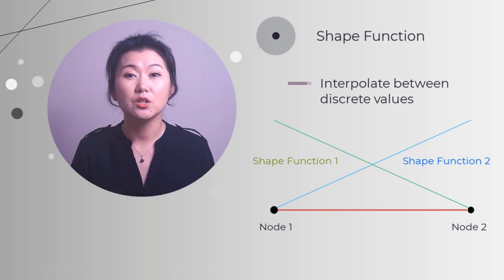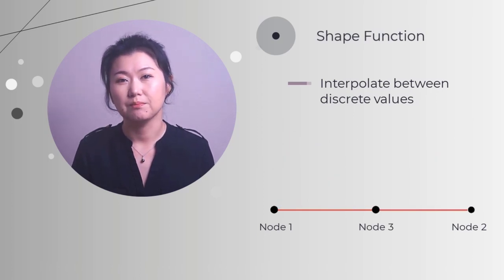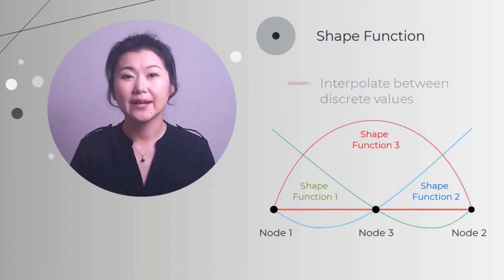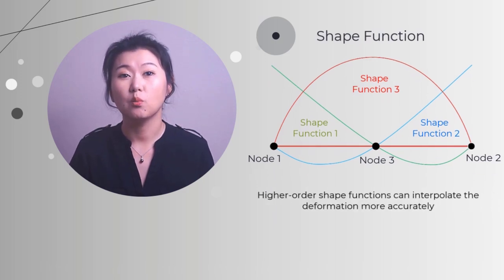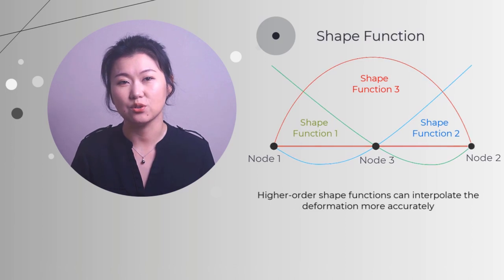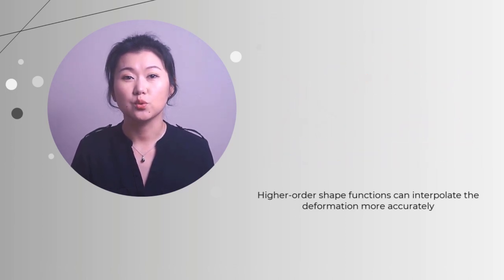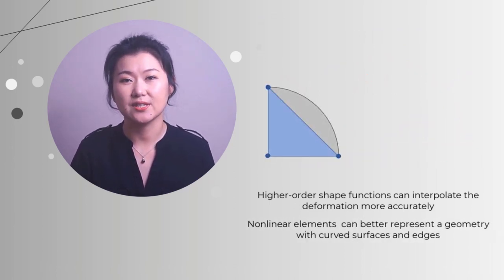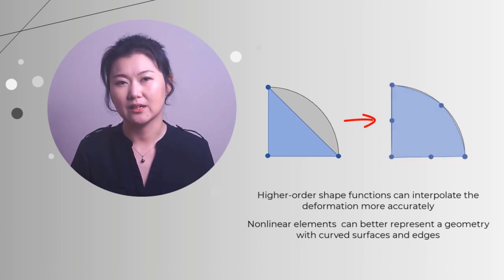With a mid-node added, the shape functions become nonlinear. Higher-order shape functions can interpolate the deformation more accurately compared to linear shape functions when the same mesh is used. And for a geometry with curved surfaces and edges, nonlinear elements can represent the geometry better.